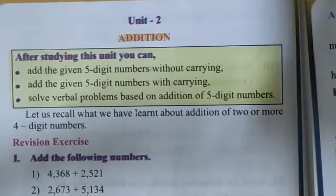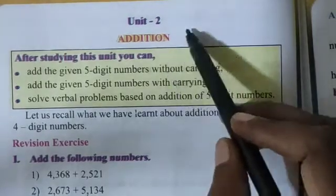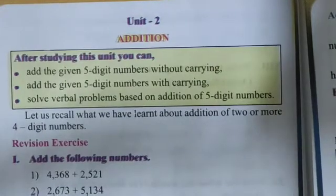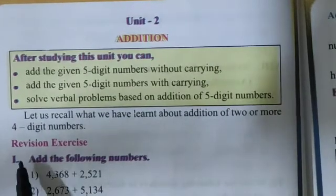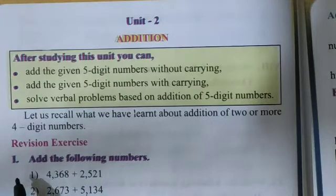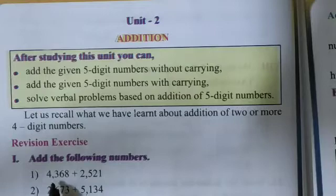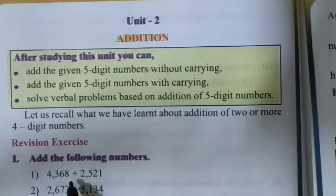Hi children, today I'll explain the new topic Unit 2 Addition. You already know about addition problems, and in the revision exercise, the first one says add the following numbers. The first question is 4368 is added by 2521.